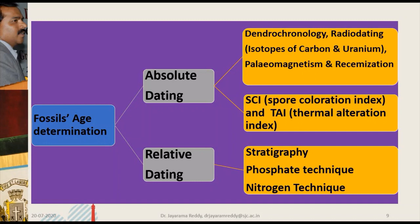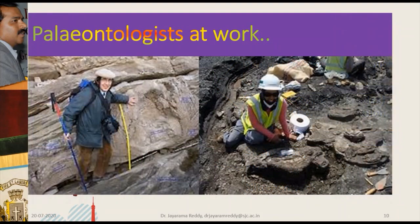There are two categories. One is Absolute Dating, which is the Direct Method of Determination of Age of Fossils, and Relative Dating, which is the Indirect Method of Determination of Age of the Fossils. We will learn these techniques one by one.